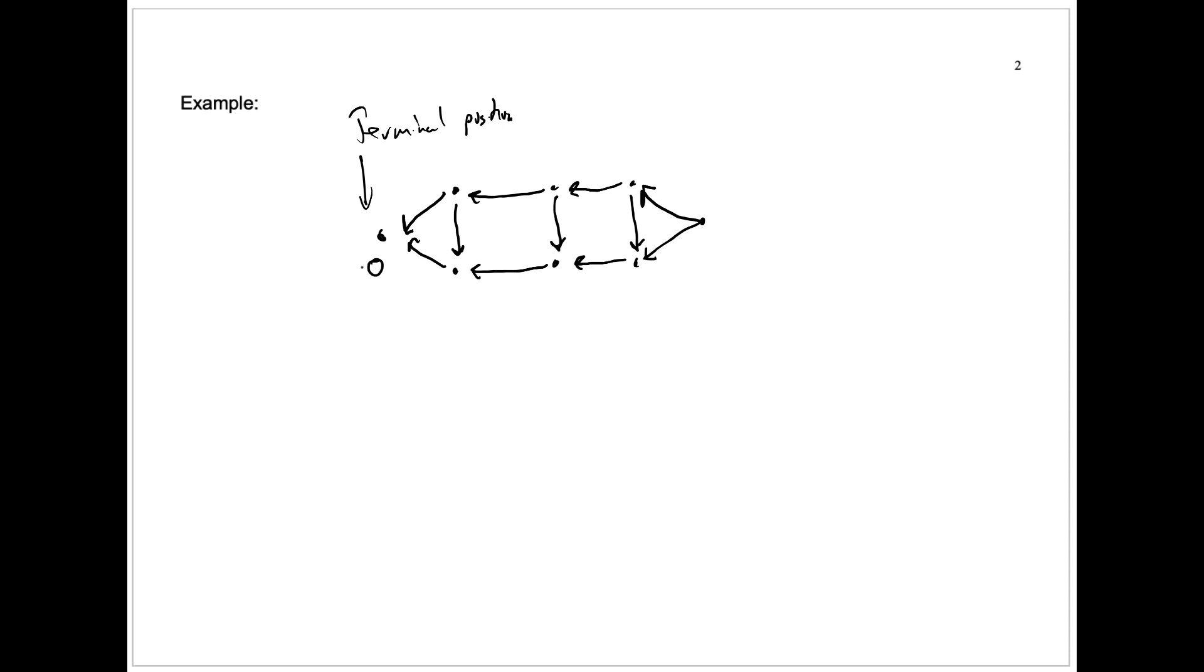That will be the case for any terminal position. That's the least number greater than or equal to zero that doesn't appear among the followers. Now here we have two nodes that lead into that terminal position. But this one here has only an edge to that terminal position and none others.